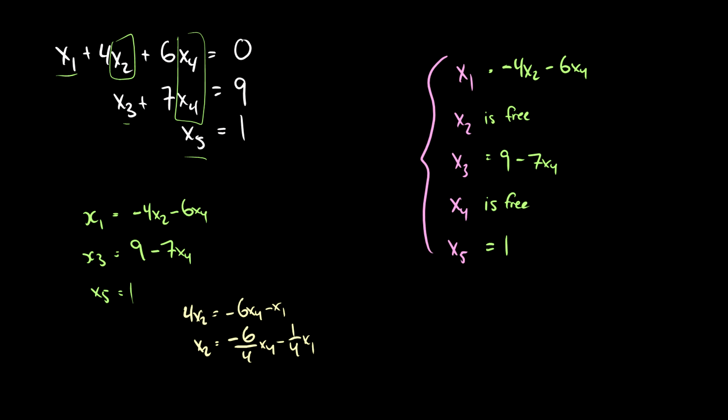And we can write that x1 is free, and x2 is equal to this. So alternatively, we could say that x2 is equal to negative 3 half x4 minus 1 fourth x1, and that x1 is free. This is completely up to you. So if you can do this, then it's okay.